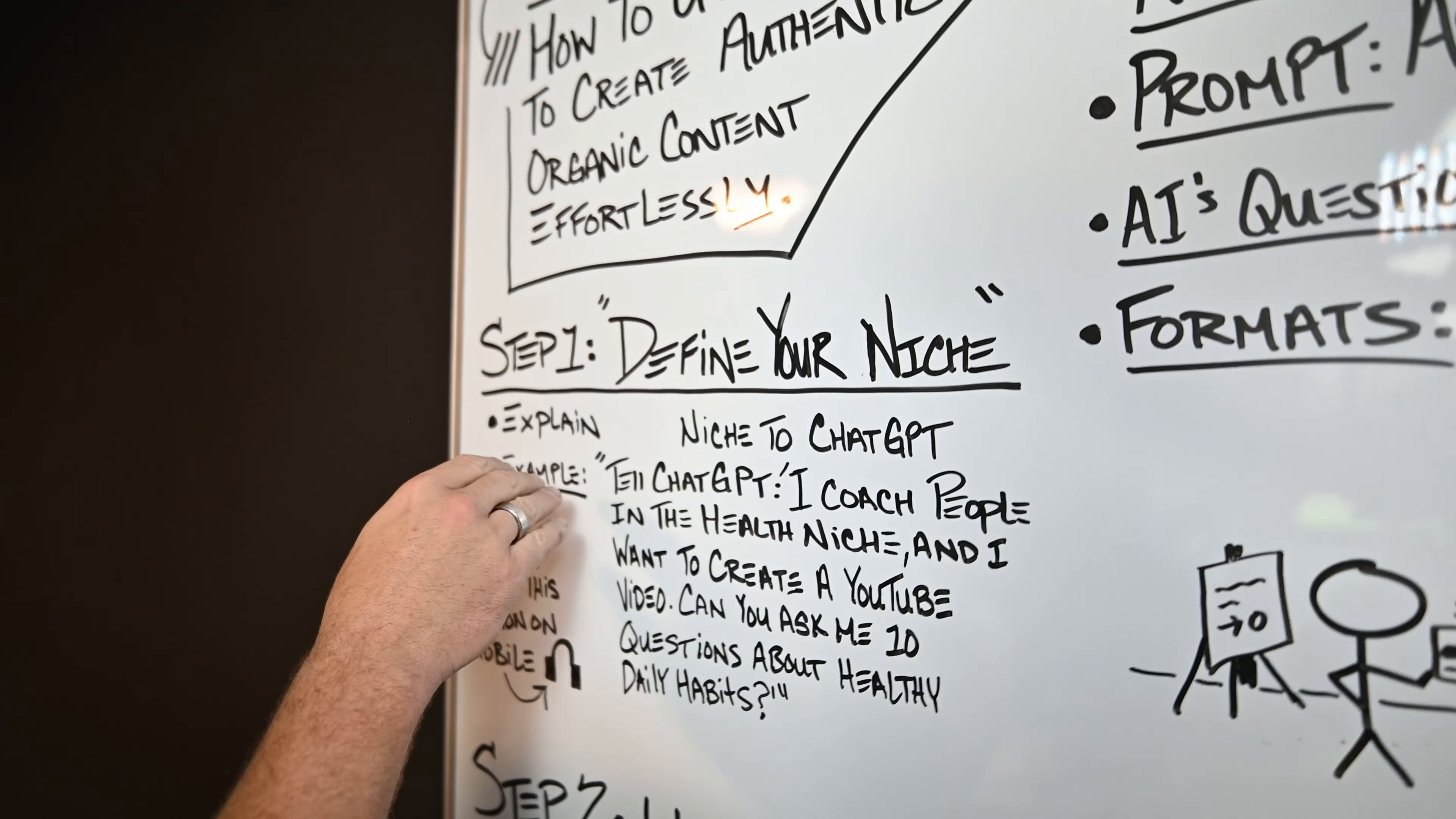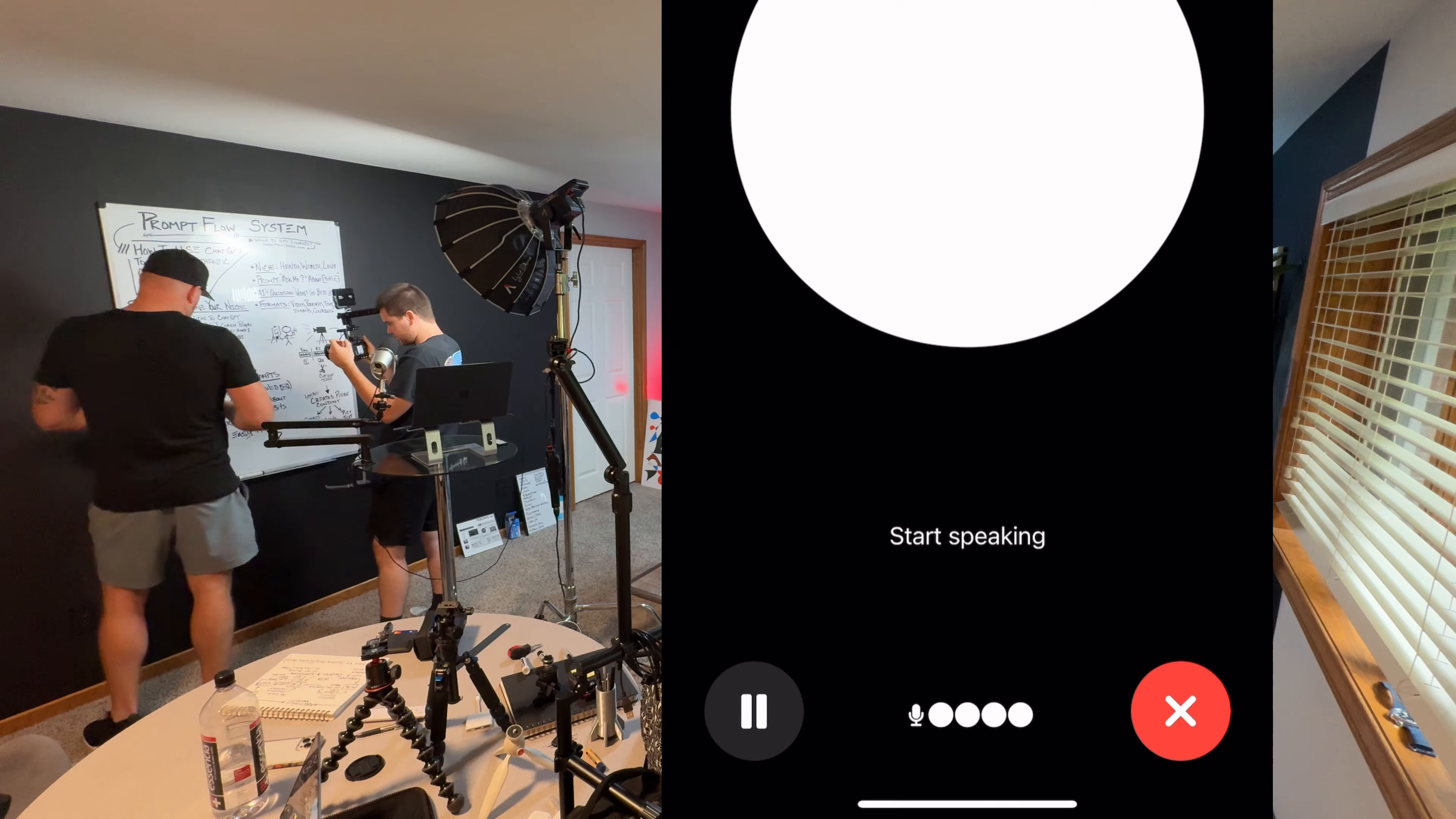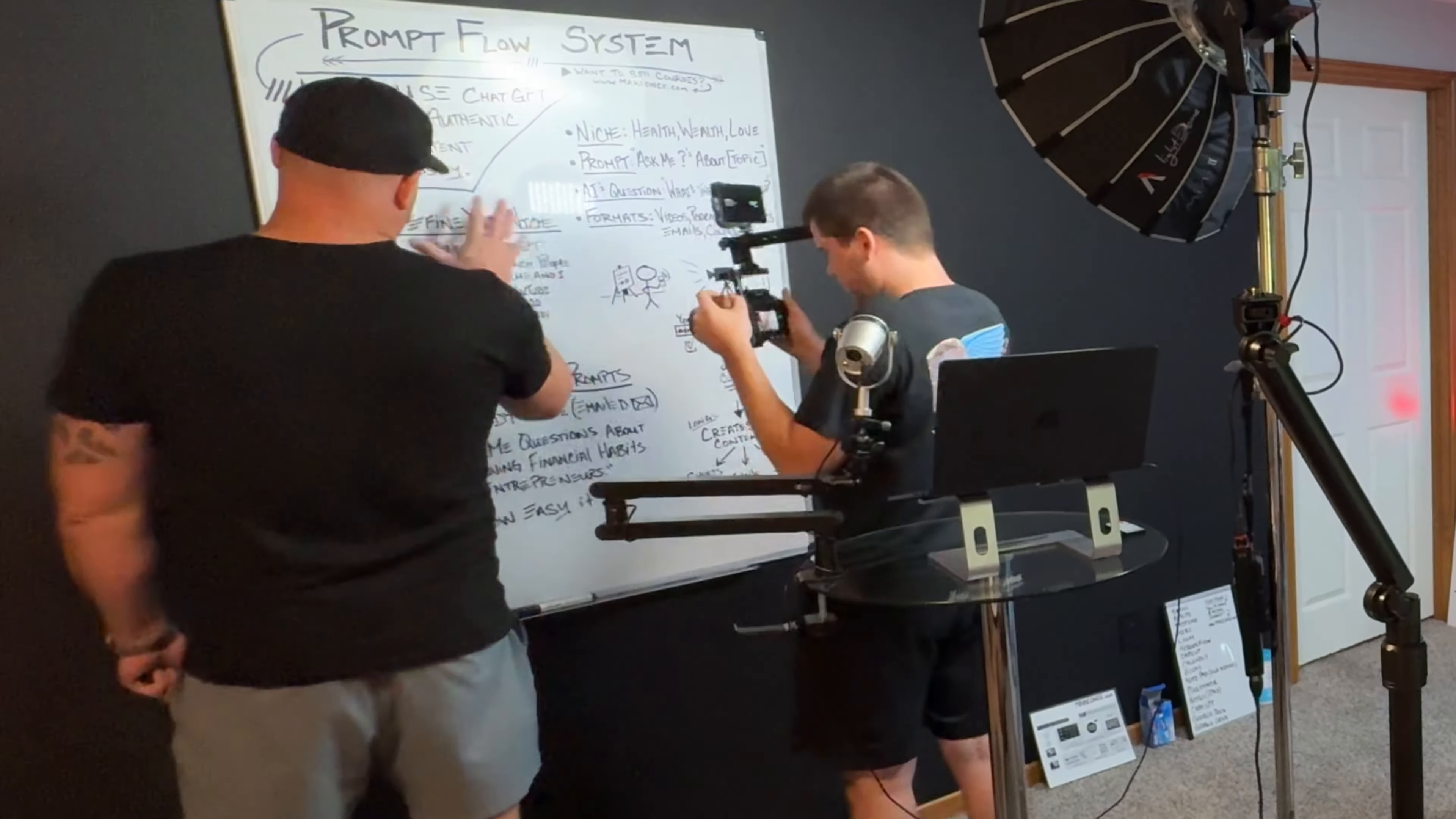You use ChatGPT to create authentic, organic content effortlessly. The first thing you do is explain the niche that you're in to ChatGPT, so you define your niche. Then the tip here is you want to press on this button on ChatGPT. If you look at ChatGPT, it's down the bottom right-hand corner, these headphones. When you press on it, it will start swinging this white circle and then it will be waiting to talk to you. You just tell ChatGPT, in this example, I coach people in the health niche and I want to create a YouTube video.